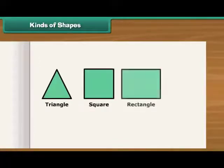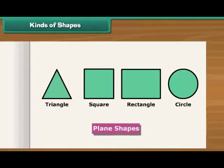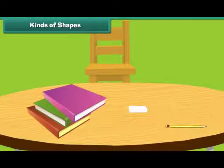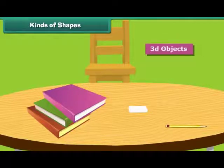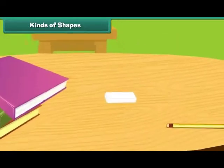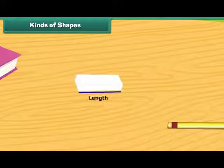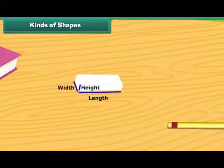The shapes that we draw on paper such as triangles, square, rectangles, circle, etc. are called plain shapes. Plain shapes are also known as 2D objects. Solid shapes are also known as 3D objects. All 3D objects have depth which 2D objects do not have.